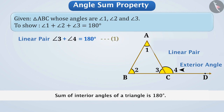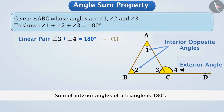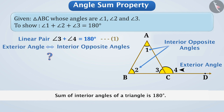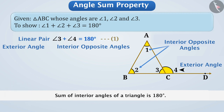If we observe, angle 4 is the exterior angle of the triangle and the interior opposite angles are angle 1 and angle 2. The measure of an exterior angle is equal to the sum of the interior opposite angles of a triangle. Therefore, we can write angle 4 is equal to angle 1 plus angle 2.